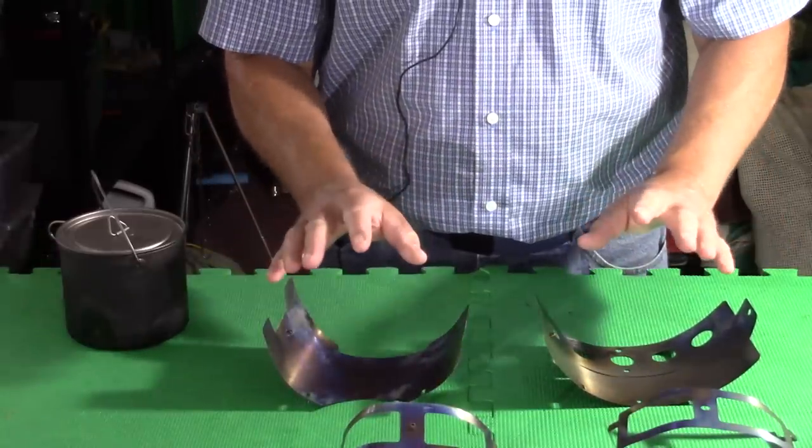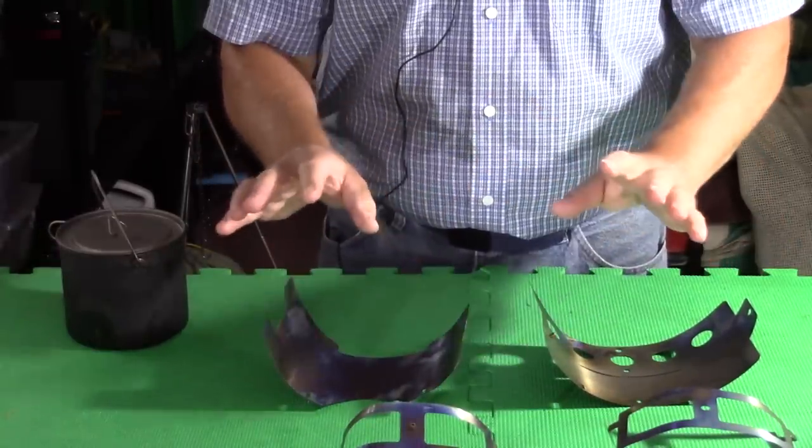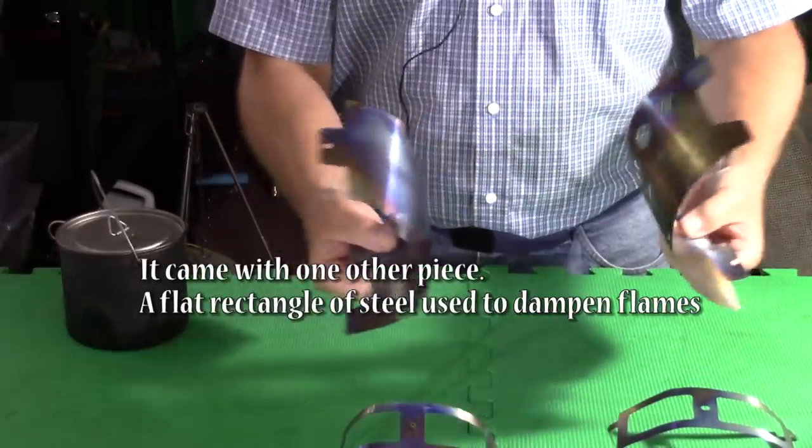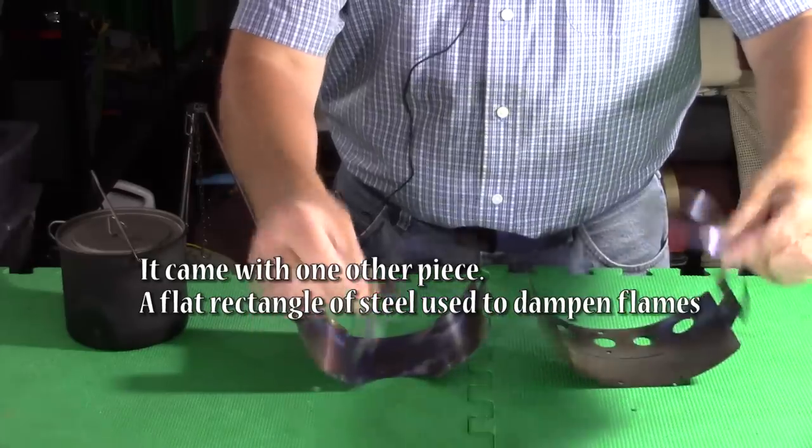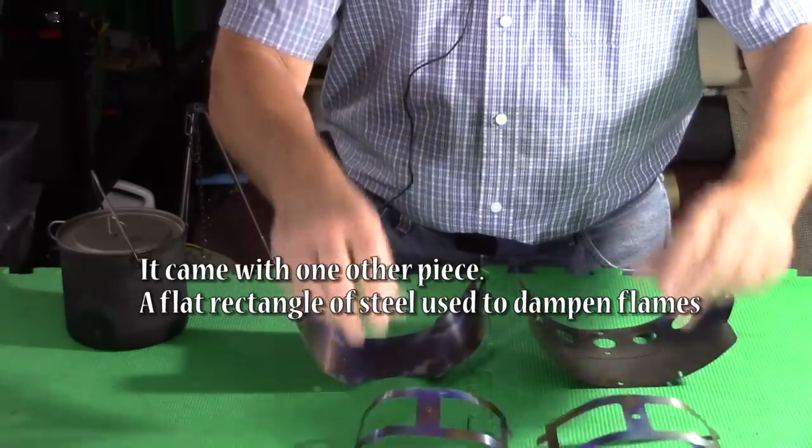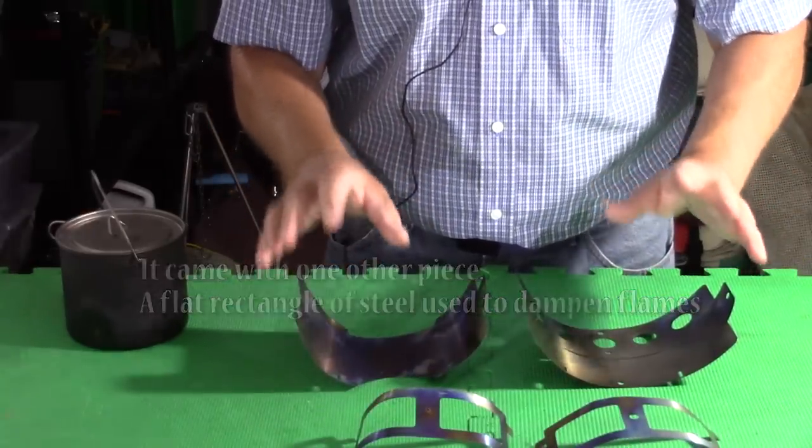When the stove arrived from China, it came with four pieces: the two sides, the two pot support pieces, identical to the Little Bug Junior.